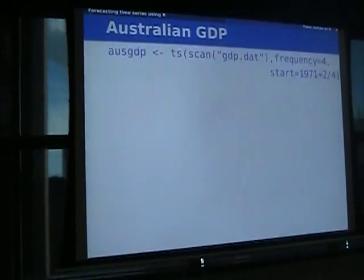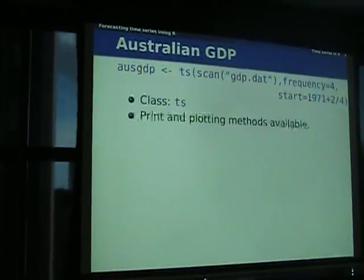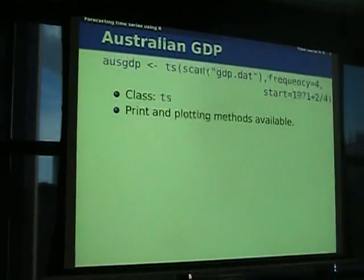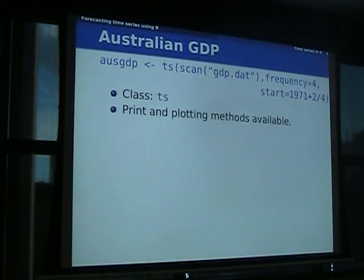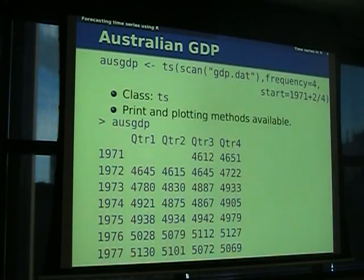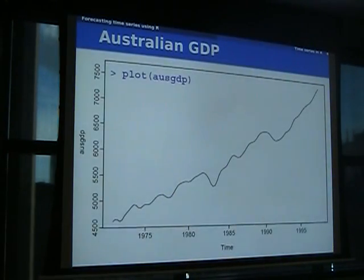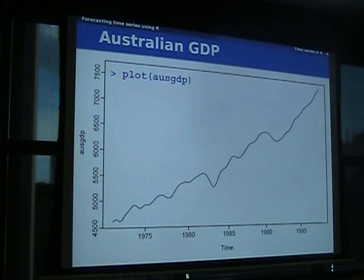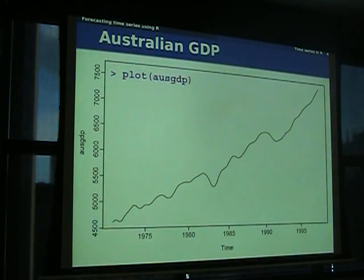So that's a little example like Australian GDP. It has the object of class TS and you can do things like print and plot. If you print, it does something smart — it prints it out in a nice table. If you plot, it figures it's a time series and does a line plot. Everything I'm going to talk about today uses TS objects. TS is the class in the base stats package that everyone uses.